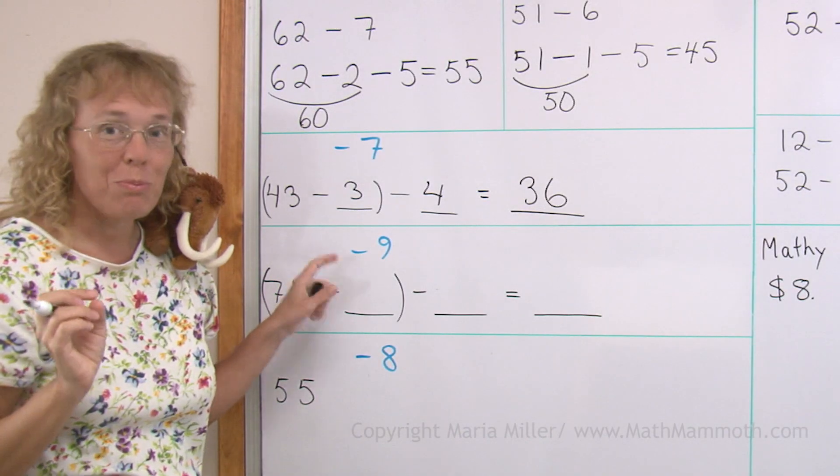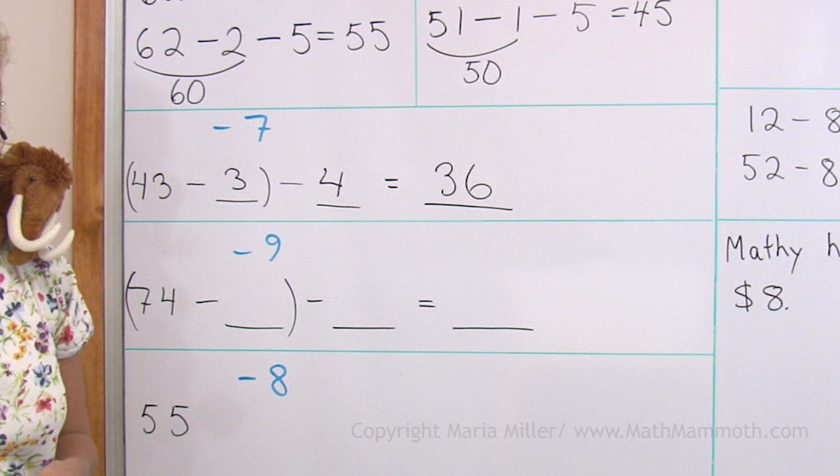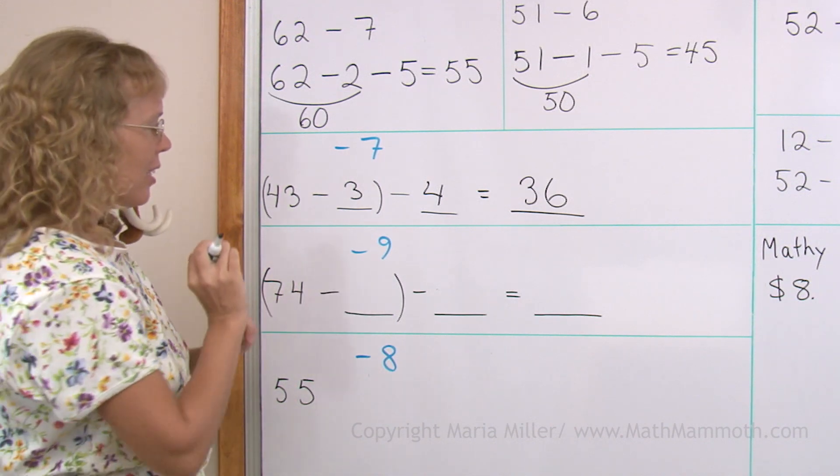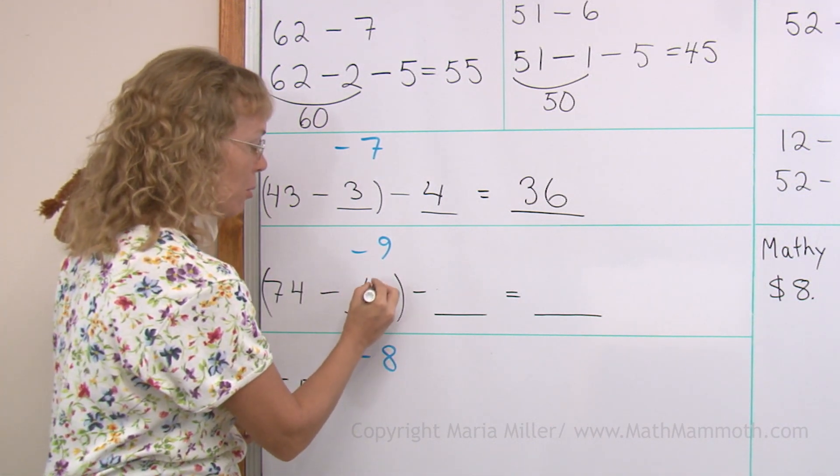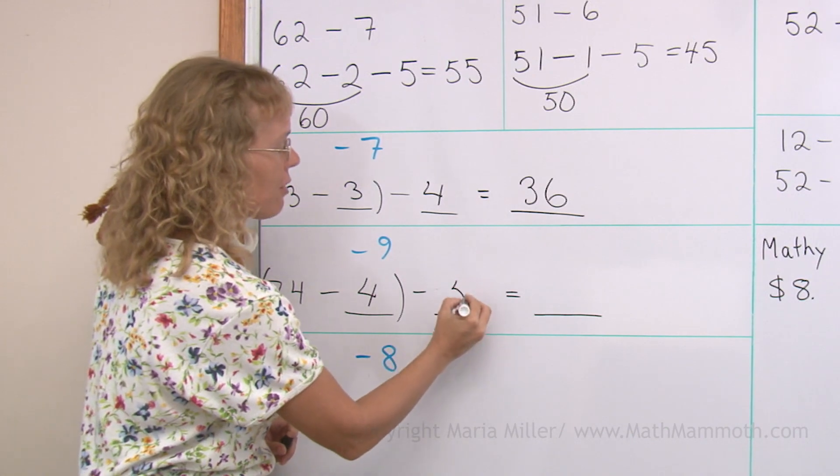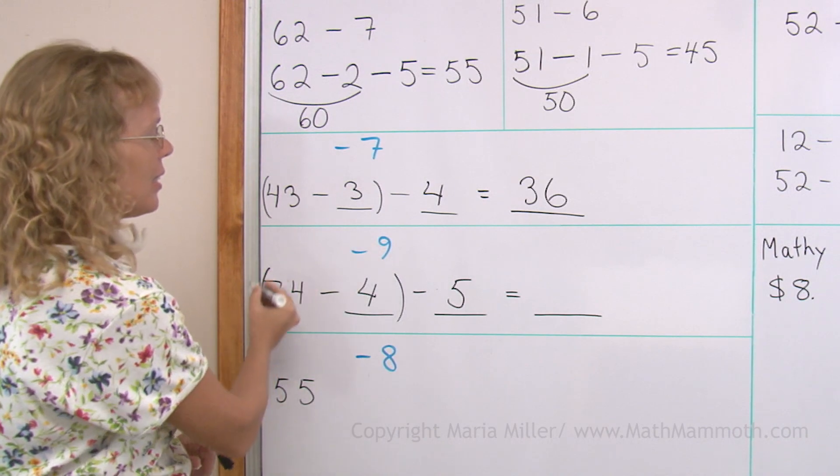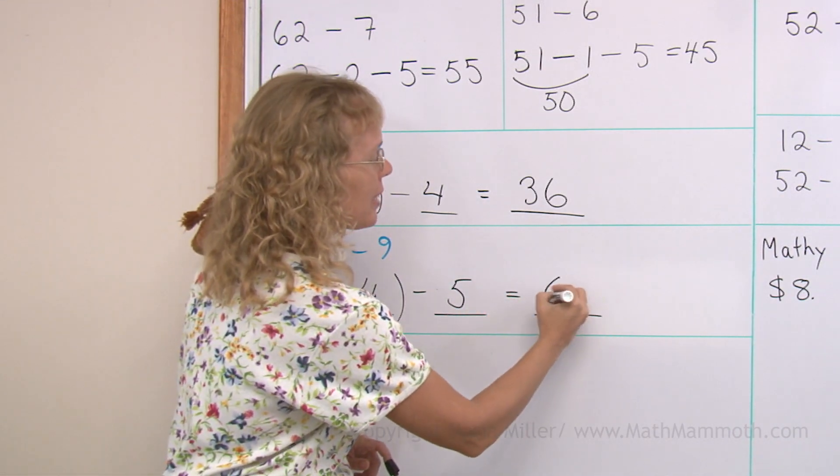Why don't you try this on your own before I explain it. 74 minus 9. First, I subtract 4. And then I need to subtract 5 more. This here is 70. 70 minus 5, 65.